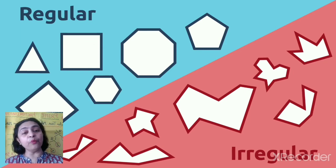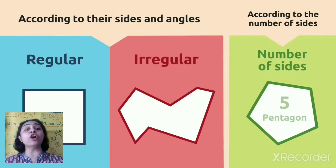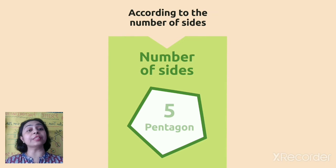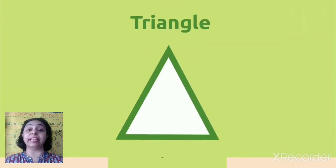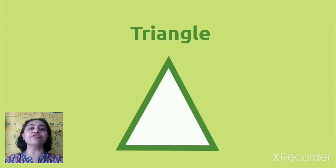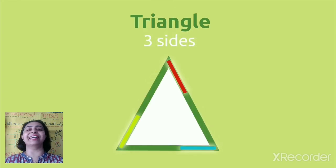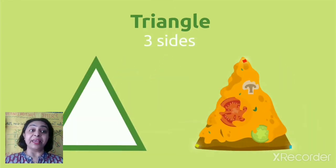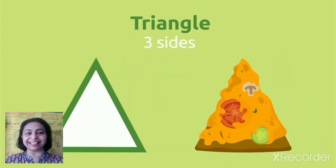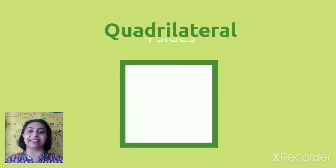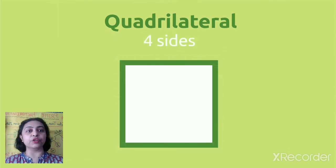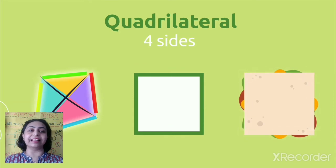Now we'll learn about the number of sides. Triangle - how many sides? Three sides, correct. You can see one pizza slice. Quadrilateral - if there are four sides, we call it quadrilateral. Examples: the sandwich, the kite, they are examples of quadrilaterals.